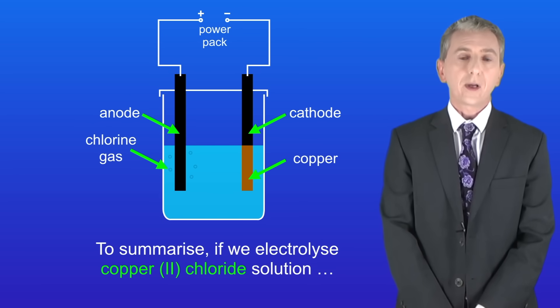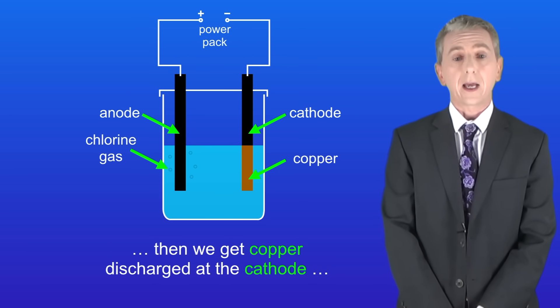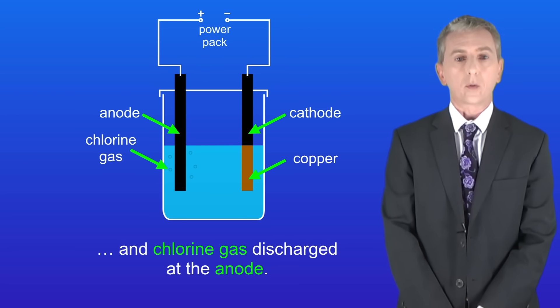To summarize, if we electrolyze copper chloride solution then we get copper discharged at the cathode and chlorine gas discharged at the anode.